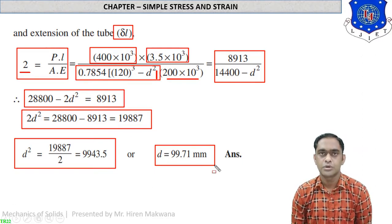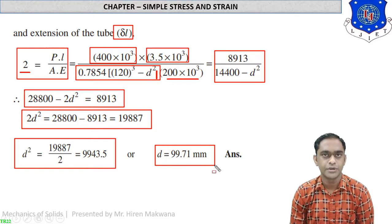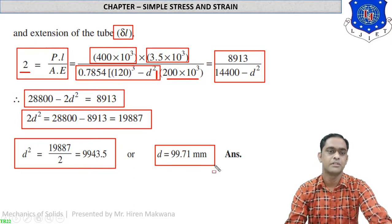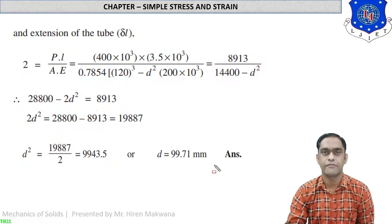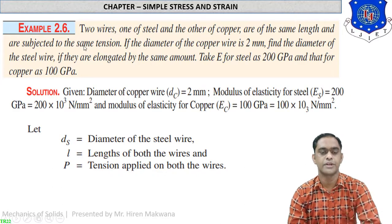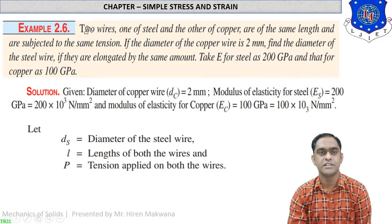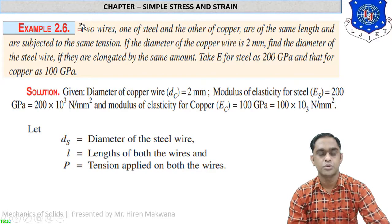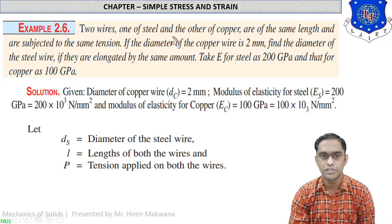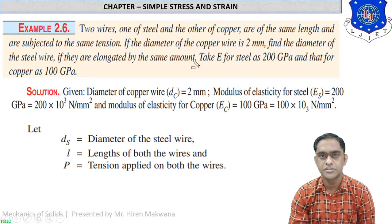So d = 99.71 mm is the inside diameter of the steel tube to sustain the given load. This example covers lots of formulas. Let us now see one more example, example number 2.6.